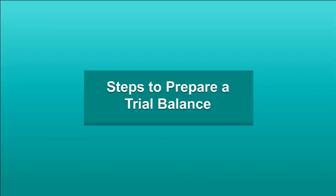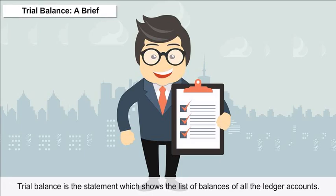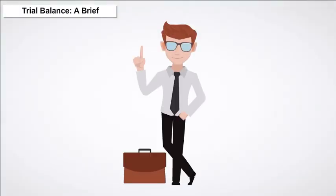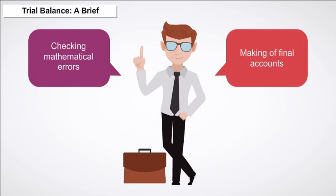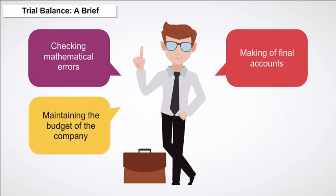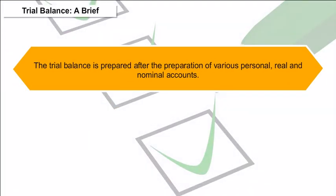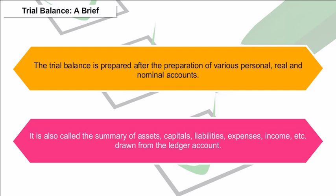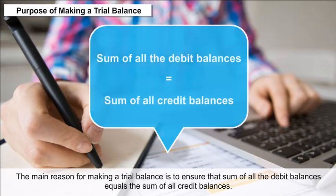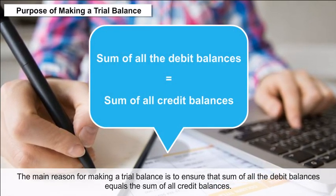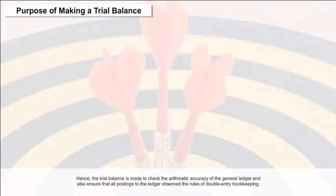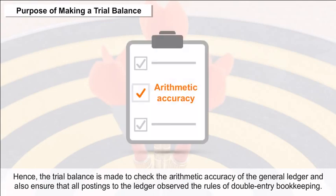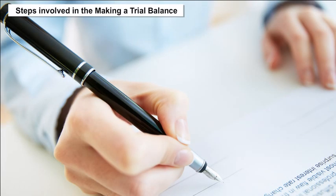Steps to Prepare a Trial Balance: The trial balance shows the list of balances of all ledger accounts and is made for checking mathematical errors, making final accounts, and maintaining the company's budget. It is prepared after preparation of various personal, real and nominal accounts, and is also called the summary of assets, capitals, liabilities, expenses, income, etc. drawn from the ledger account. The main reason for making a trial balance is to ensure that the sum of all debit balances equals the sum of all credit balances, and also to ensure that all postings to the ledger observe the rules of double entry bookkeeping.